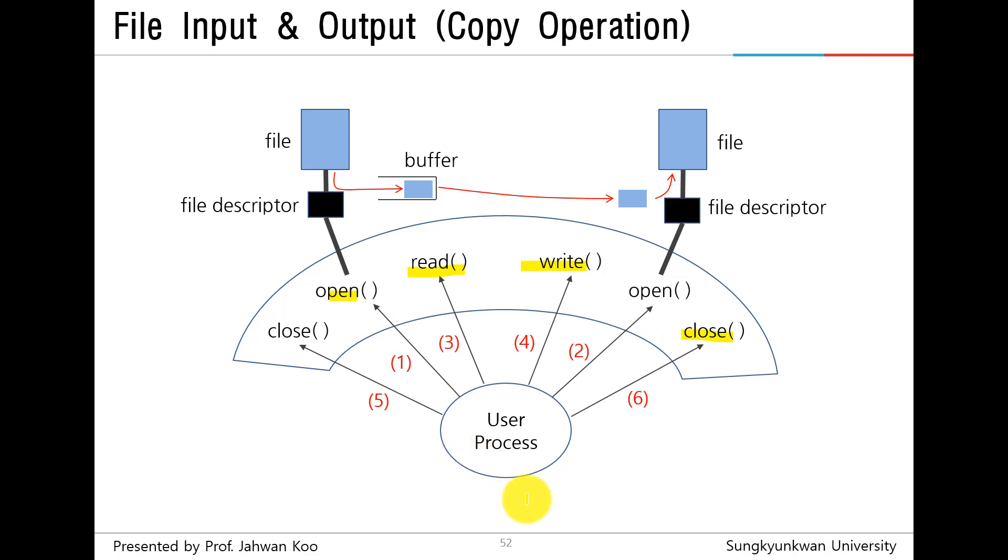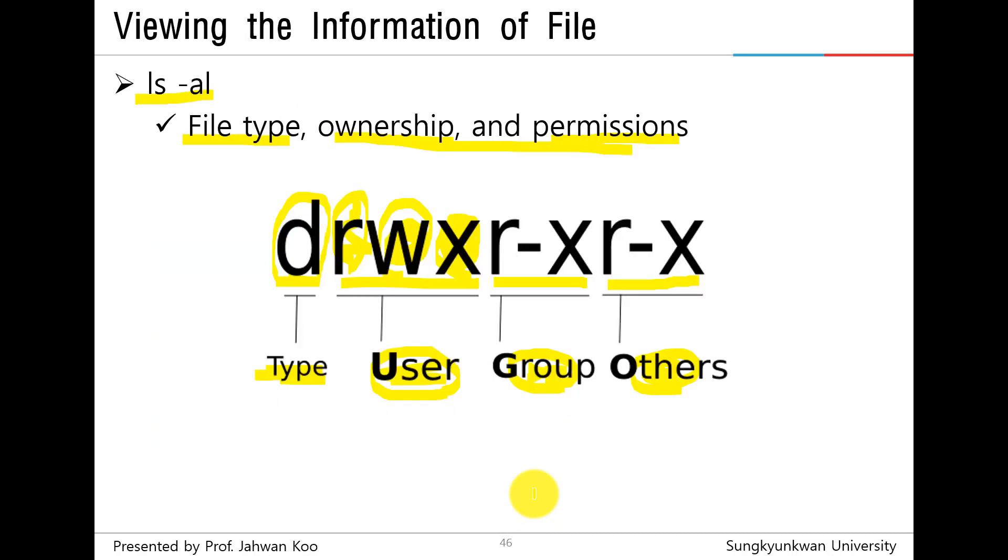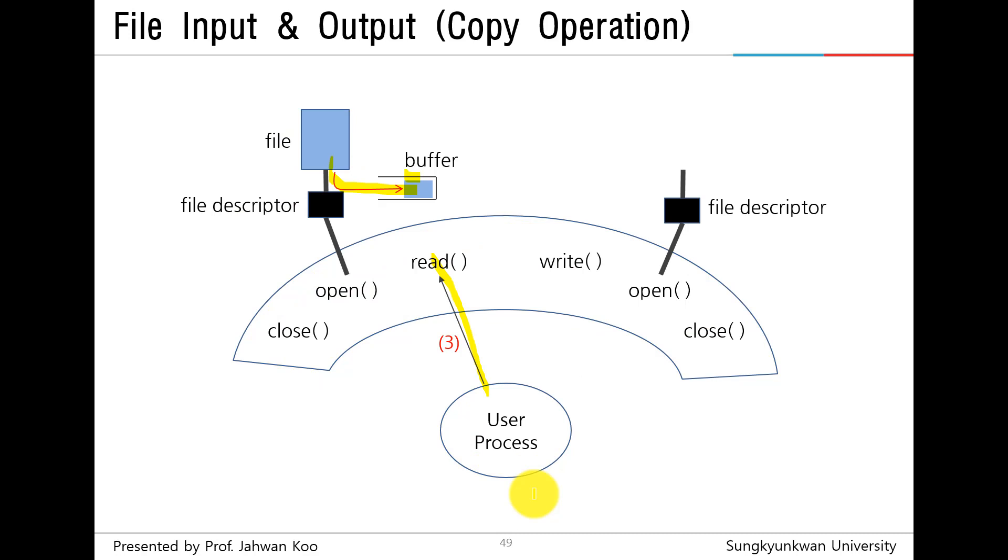Okay, until now we have learned the concept of file input and output. What is file? What file types are there? File ownership and file permission. For example, copy operations - we can just call the system calls open, read, write, close for file input and output.